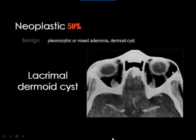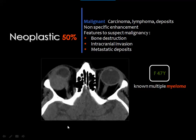Neoplastic lesions in the lacrimal gland may be benign, like pleomorphic adenoma or dermoid cysts. Here is a good example of a dermoid cyst containing fat in the region of the lacrimal gland on the left side. Malignant lesions in the lacrimal gland may represent carcinoma, lymphoma, metastatic deposits, or any kind of primary malignancy. For example, a patient known to have multiple myeloma presenting with proptosis and lacrimal gland swelling proved to have myeloma in the lacrimal gland. Clinical data are very important to judge the possible underlying pathology.